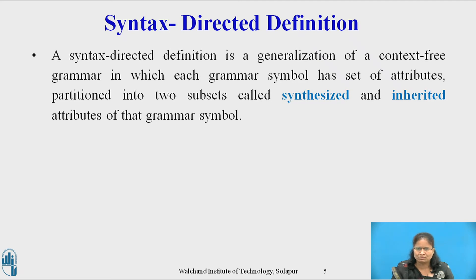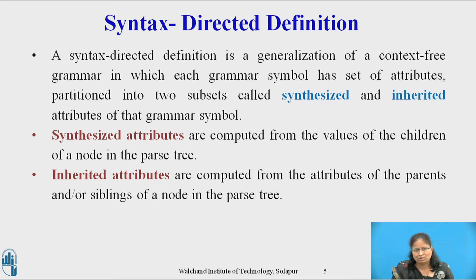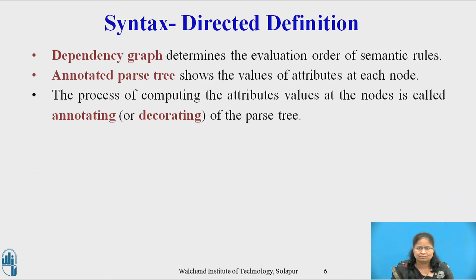This set of attributes for a grammar symbol is partitioned into two subsets called synthesized attribute and the inherited attribute for that grammar symbol. Each production rule is associated with the set of semantic rules. An attribute may hold almost anything such as a string, a number, a memory location, or a complex record. The value of an attribute at a parse tree node is defined by a semantic rule associated with the production used at that node. The value of a synthesized attribute at a node is computed from the value of the children of that node in the parse tree. Semantic rules set up dependencies between the attributes which can be represented by a dependency graph, and this dependency graph determines the evaluation order of these semantic rules.